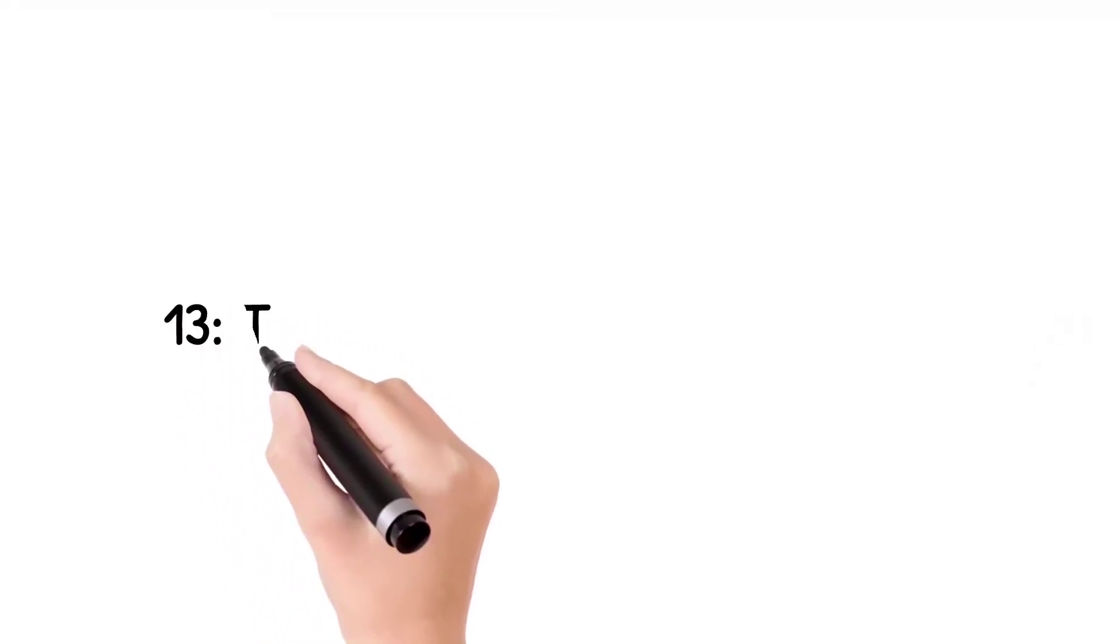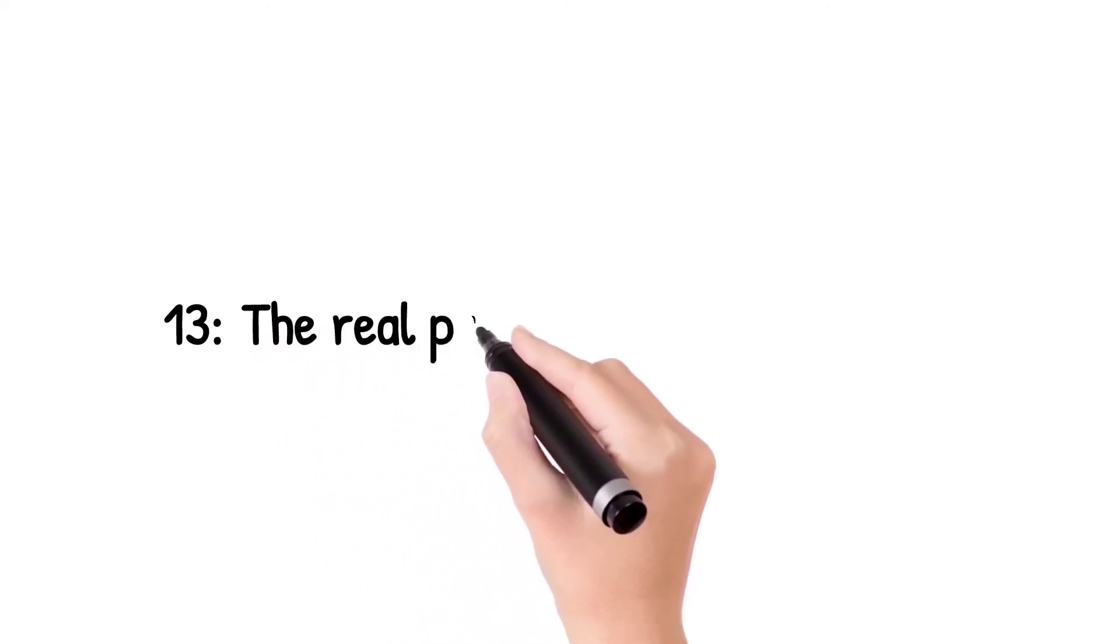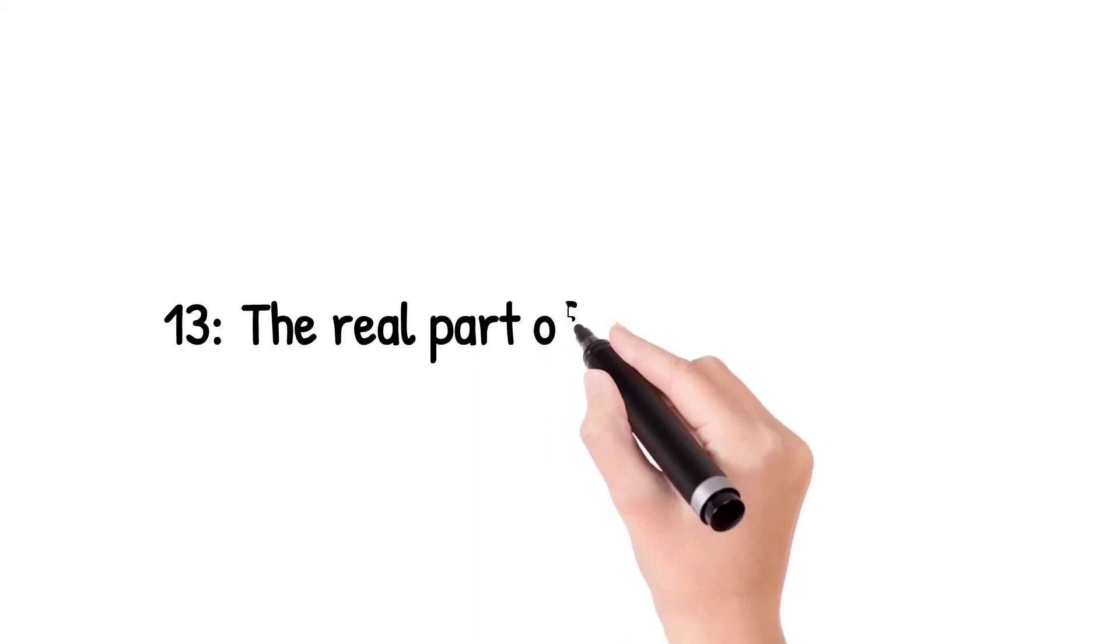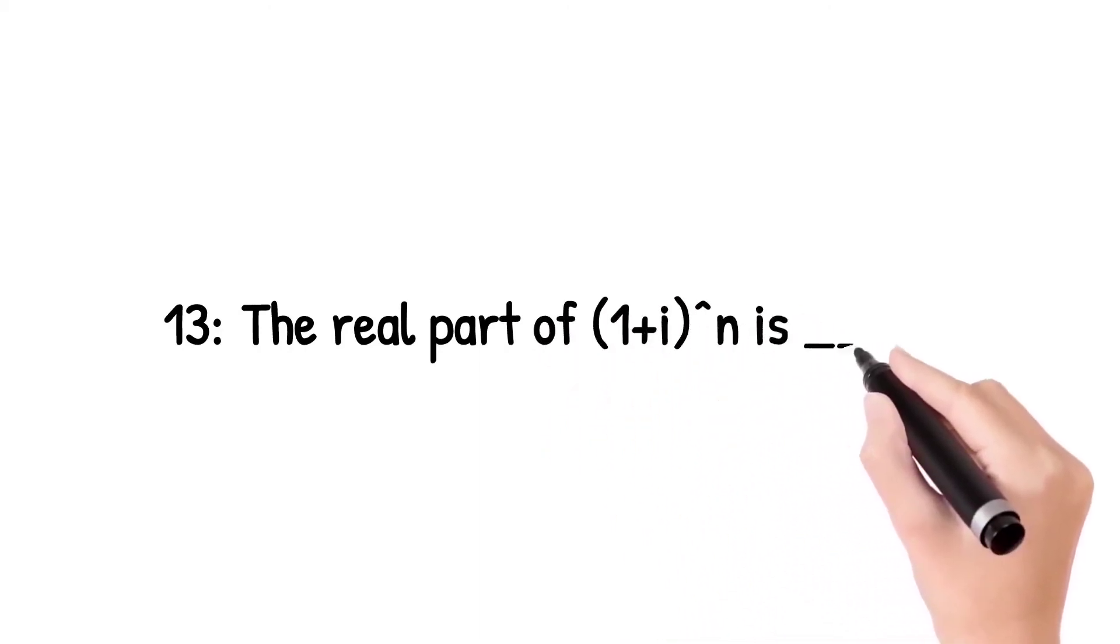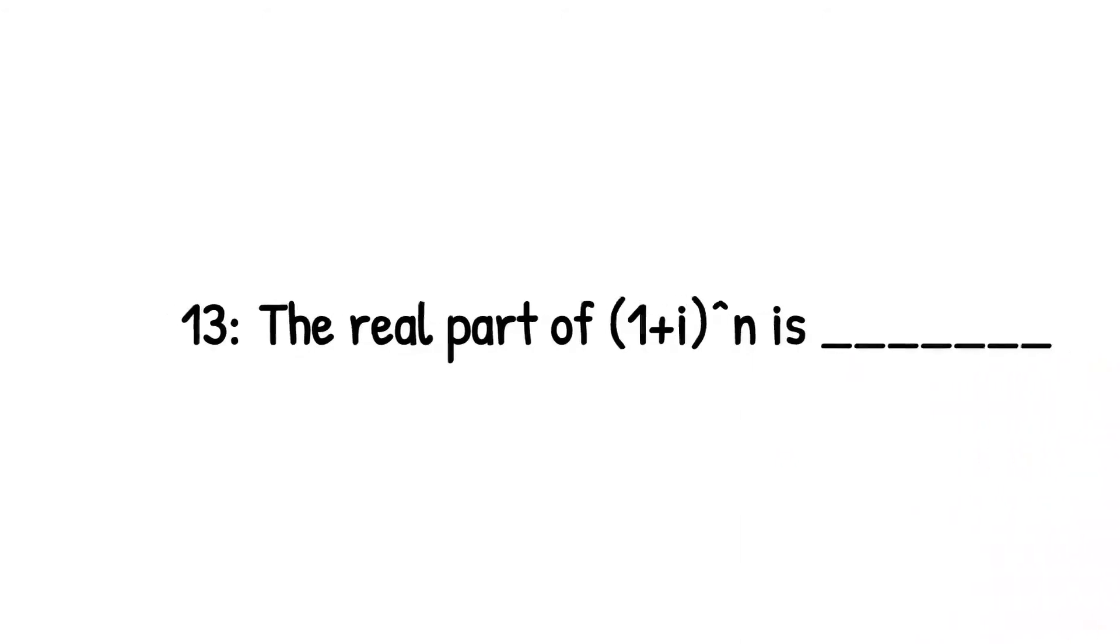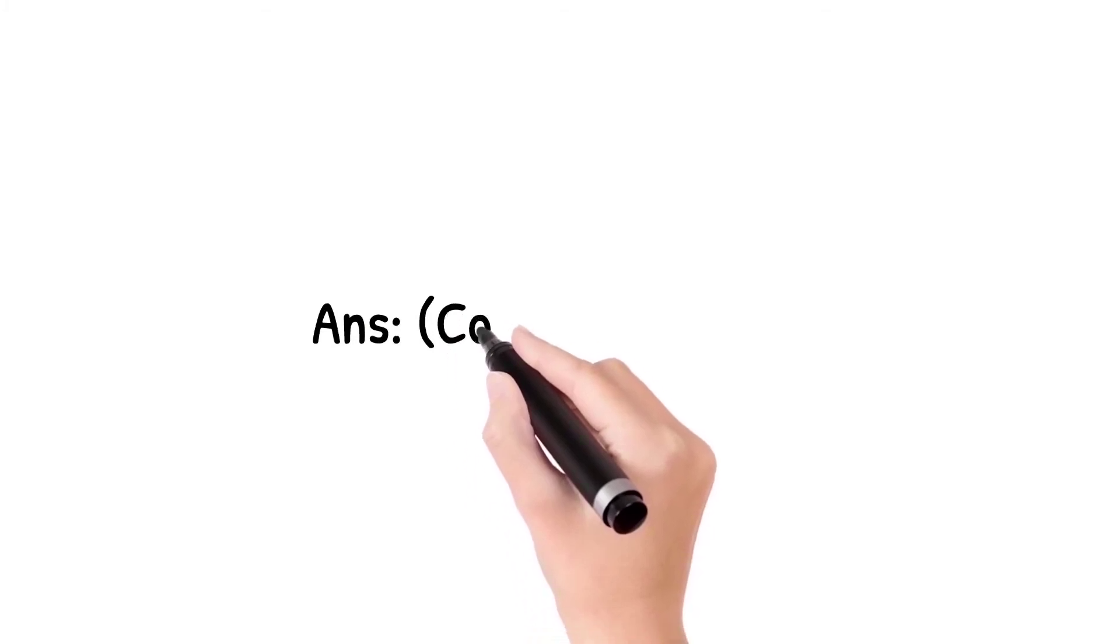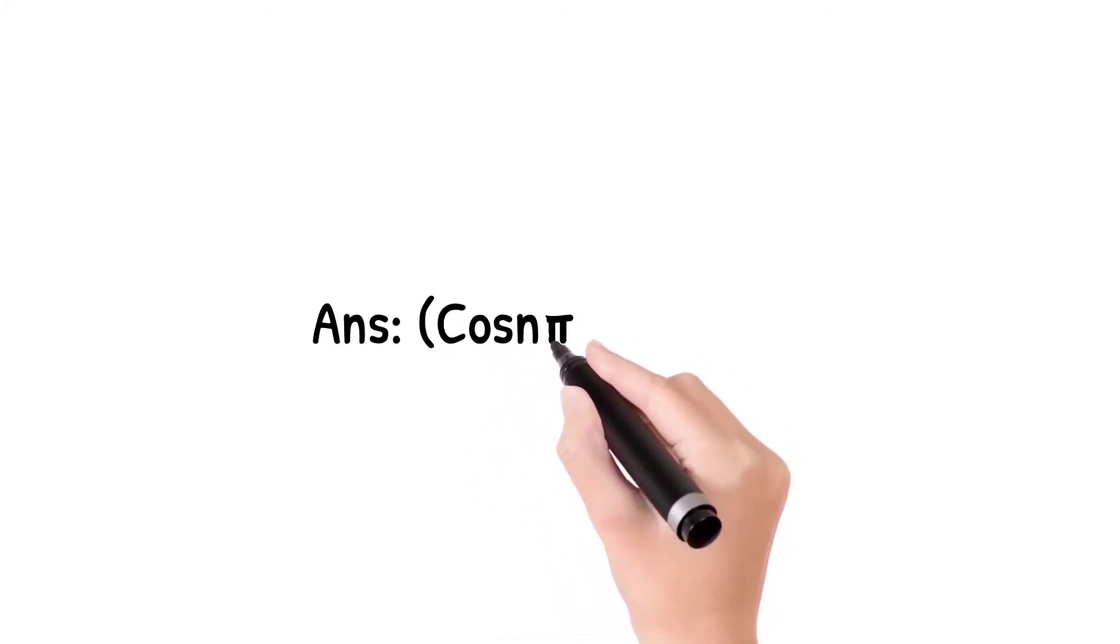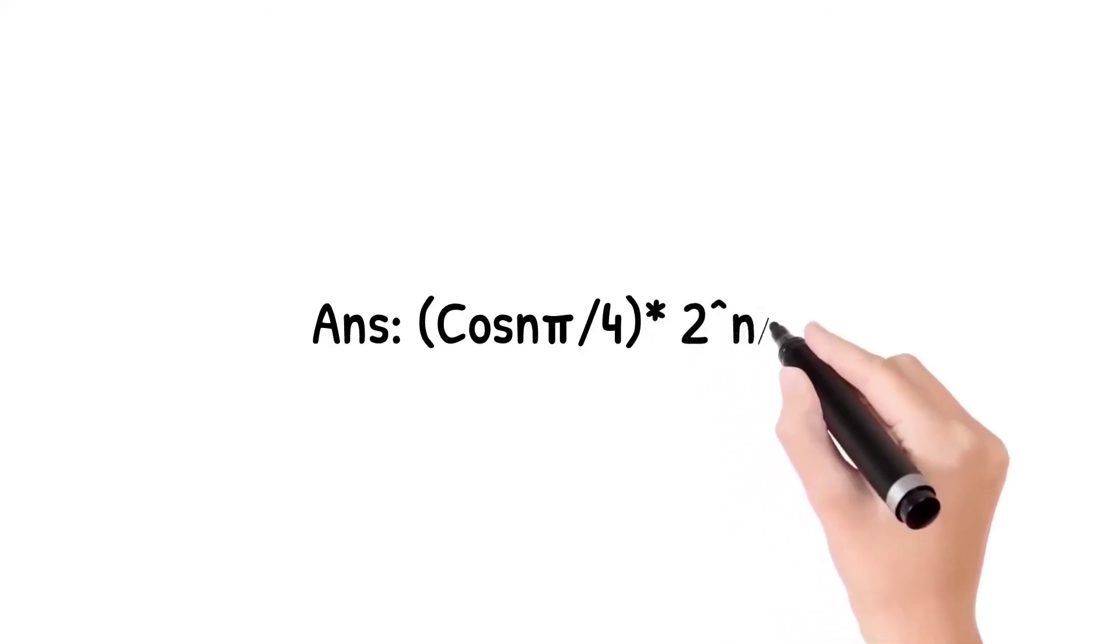Question number 13: The real part of 1 plus iota raised to power n is? If we solve this question, then we found that the real part is 2 raised to power n by 2 multiplied by cos n pi by 4.